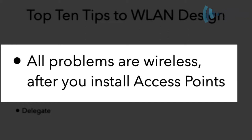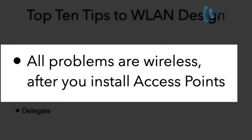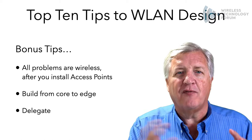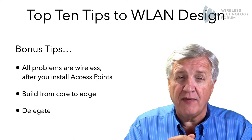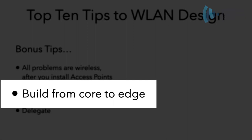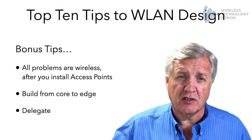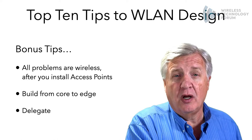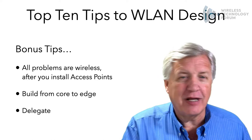All problems will look like a wireless problem the minute you fire up the access point. So do whatever you can to make sure the wired infrastructure is working before you put that last component — the access point — in place. As soon as you put the access point on the network it becomes a wireless problem, and most problems aren't wireless problems. I like to build from the core out to the edge, so that everything except wireless is working and tested before we get there.